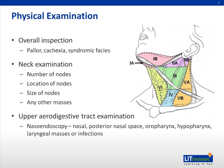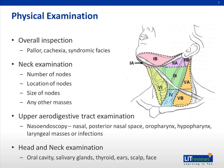This involves nasal endoscopy for a full view of the anterior and posterior nasal space, the oropharynx, hypopharynx, and larynx for any masses or infection. At the same time, we can also look for pooling of saliva, which may indicate a deeper hypopharyngeal lesion. After that, we perform a full head and neck examination consisting of the oral cavity, salivary glands, thyroid, ears, scalp, and face.